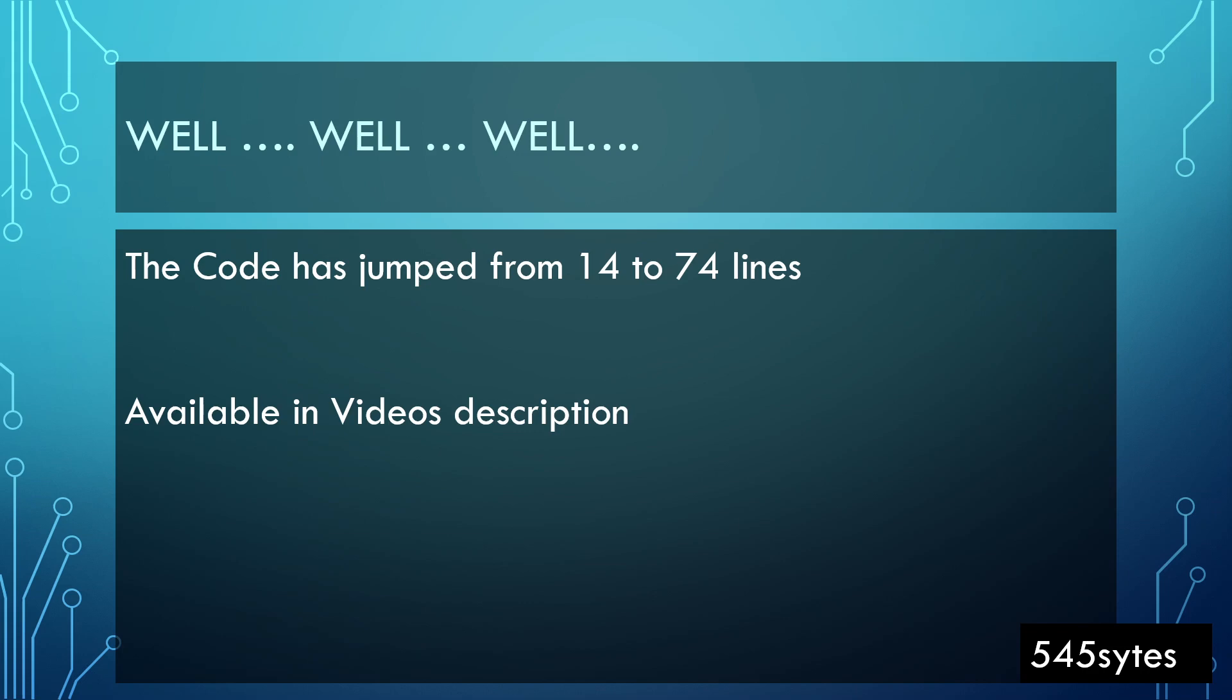The good news is that we have a CRC calculator and the bad news is that the code has jumped from 14 lines to 74 lines. This code is available in the description of this video. I will explain key commands and how these 74 lines of code work.